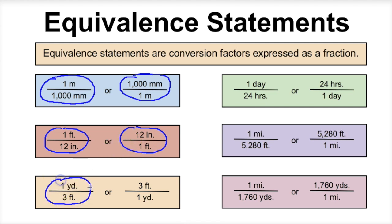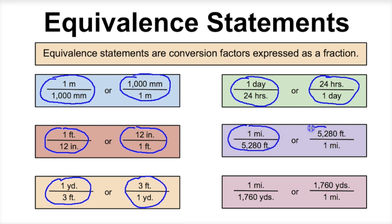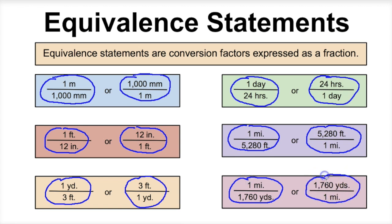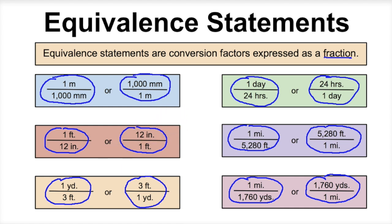We also know that 1 yard is 3 feet, and if we flip this fraction, 3 feet is 1 yard. We know that 1 day is 24 hours, or that there are 24 hours in 1 day. We know 1 mile is 5,280 feet, or 5,280 feet is 1 mile. And another equivalent statement: 1 mile is 1,760 yards, or there are 1,760 yards in 1 mile. Equivalent statements are conversion factors expressed as a fraction, and we can flip these fractions depending on what we're trying to solve for. Let's use these in some example dimensional analysis problems.